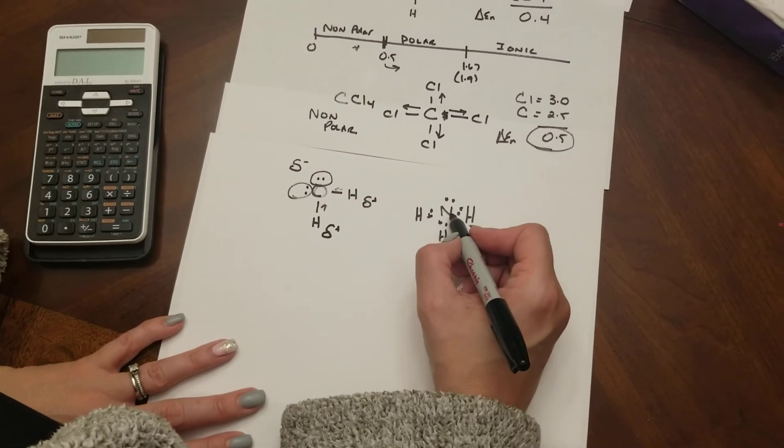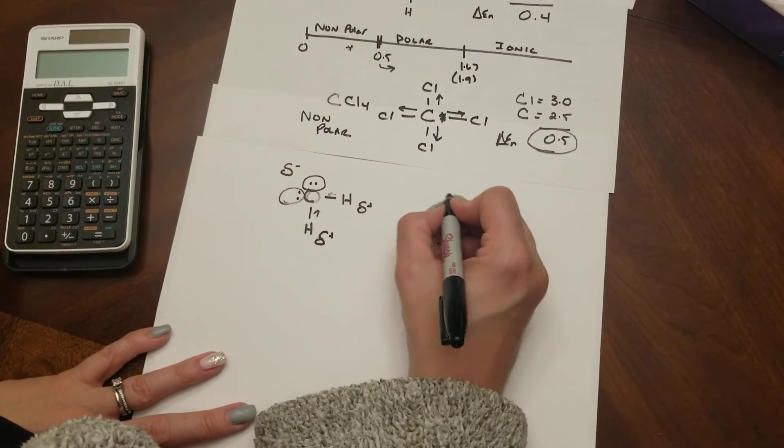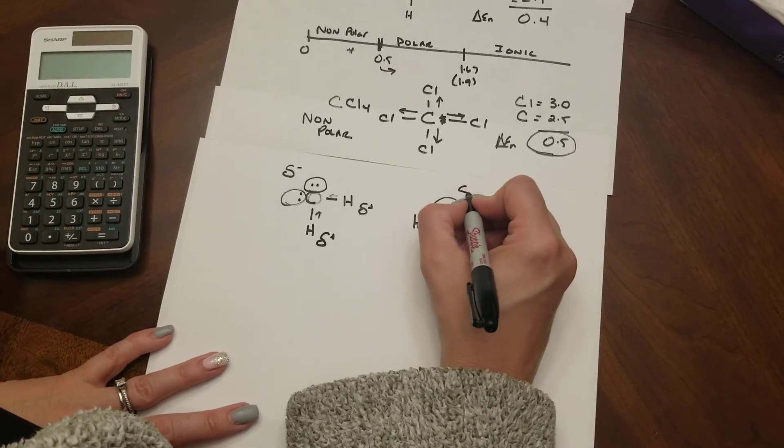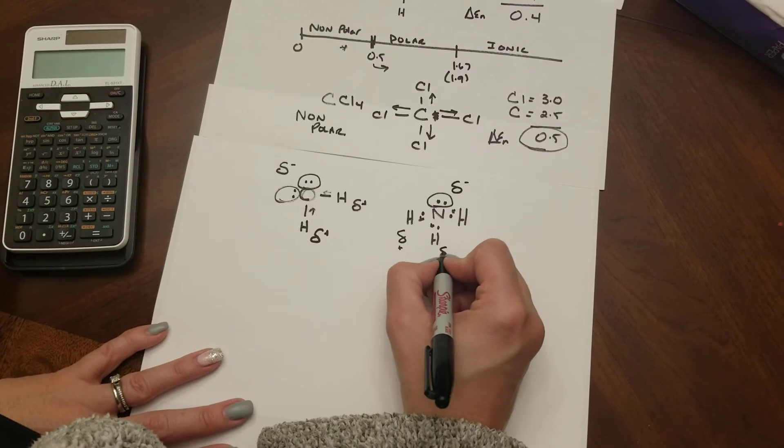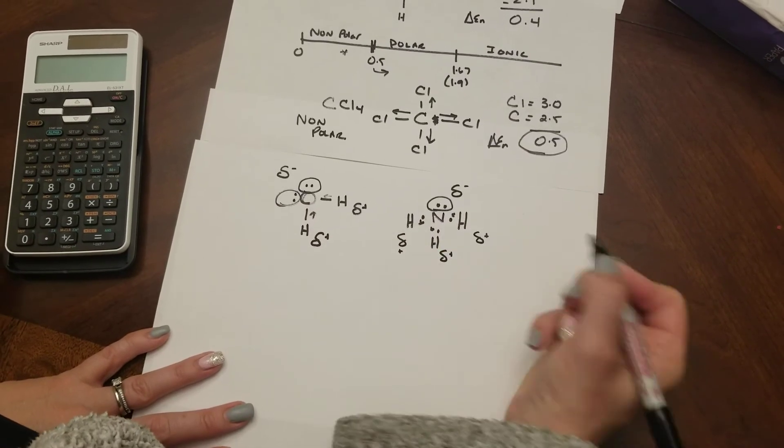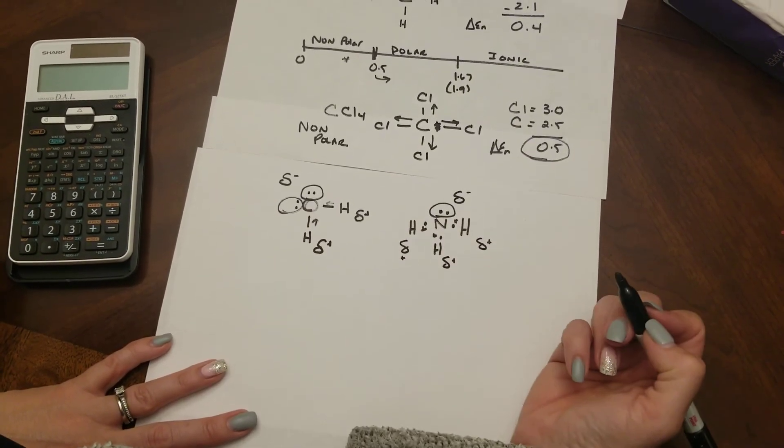Same with ammonia. The ammonia molecule has a pair of electrons and this free pair of electrons gives it a negative looking end and again the hydrogens would be positive looking ends. So again this whole molecule is polar.